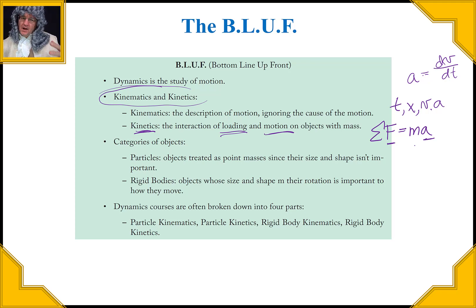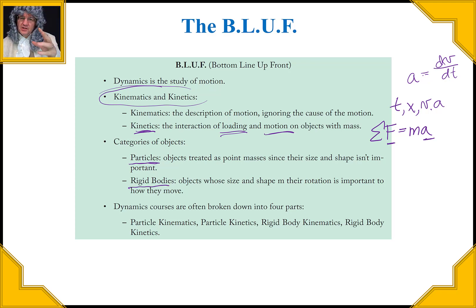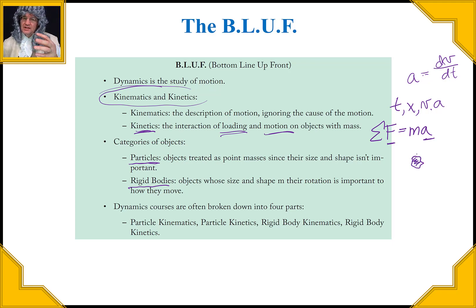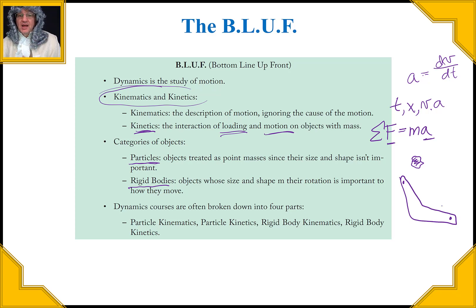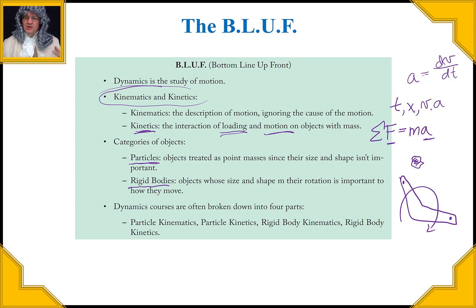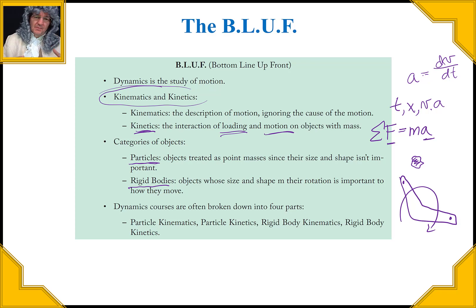We can also categorize things in dynamics by the nature of the object — we have particles and rigid bodies. Particles are treated as point masses; they don't necessarily have to be very small, they just have to be such that their size and shape don't really matter to the outcome. But a rigid body might have a shape significant enough that we have to consider it, and we'll also have to worry about its rotation, whereas particles don't rotate. So dynamics can be broken down into four parts: particle kinematics, particle kinetics, rigid body kinematics, and rigid body kinetics.